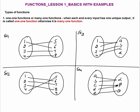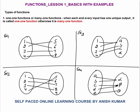Another type of function: one-one function or many-one function. By name, one-one function simply means that one input has one unique output. Otherwise, it's a many-one function. In the first example: input 1 is connected with output 6, input 2 has one unique output 5, input 3 has its own unique output 7, input 4 has its own unique output. So this is a one-one function. Can you tell if it is onto or into? It is an onto function because each and every element of the co-domain must be connected with the domain.